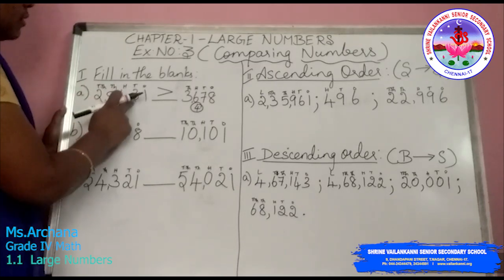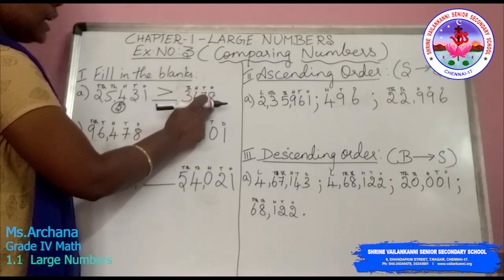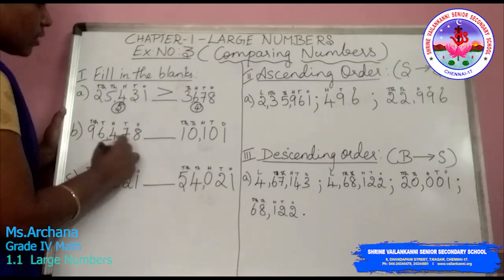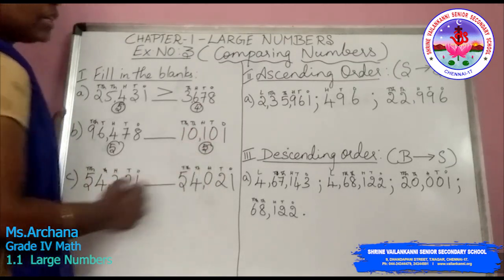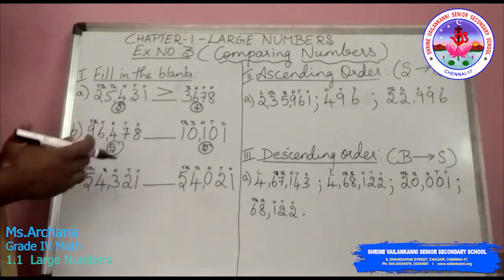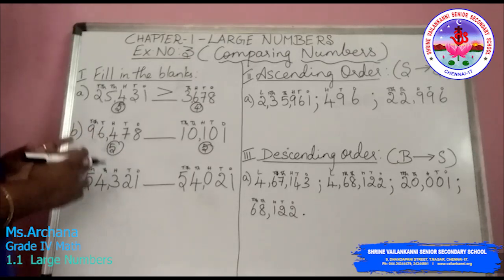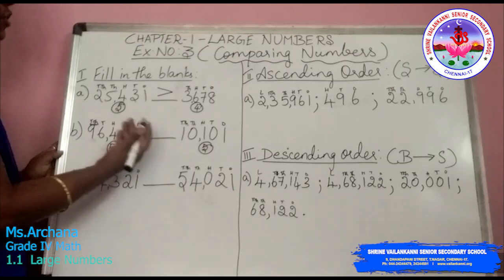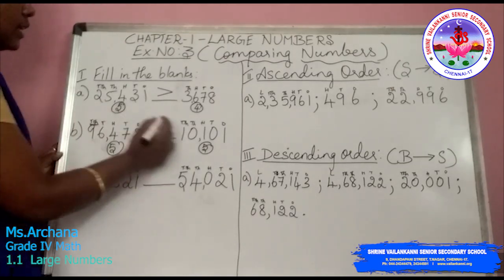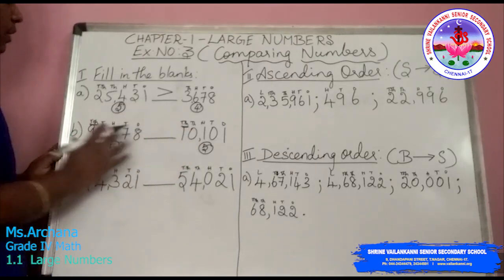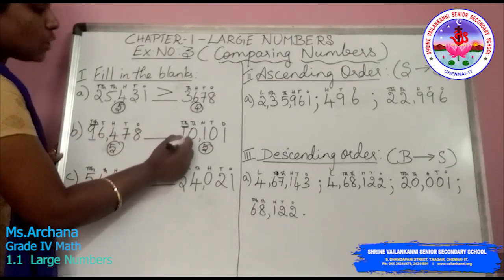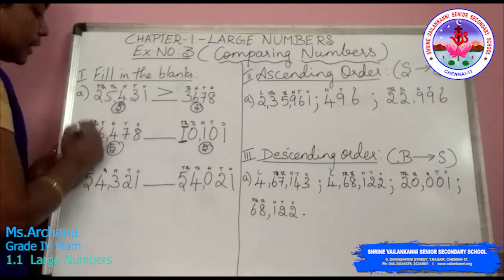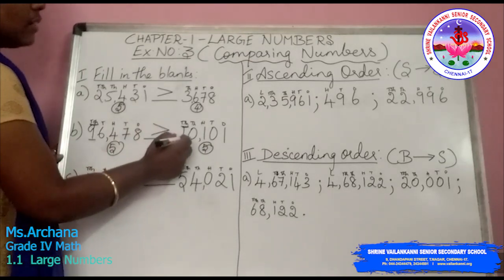Look at the second example: 96,478 has 5 digits, and 10,101 also has 5 digits. So when you have the same number of digits, you will follow the second rule: start comparing numbers from the highest place value. In the 10,000s place value I have 9, and here I have 1. Since 9 is greater than 1, 96,478 is greater than 10,101.